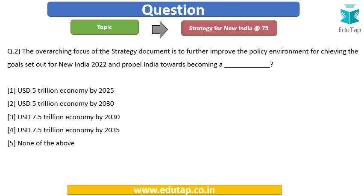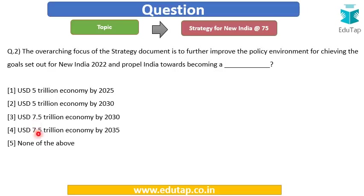Next question: The overarching focus of the strategy document is to further improve the policy environment for achieving the goals set out for New India 2022 and propel India towards becoming a — options are: USD 5 trillion economy by 2025; USD 5 trillion economy by 2030; USD 7.5 trillion economy by 2030; USD 7.5 trillion economy by 2035; or none of the above.